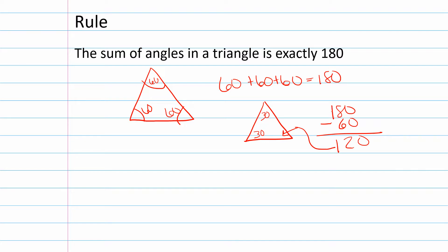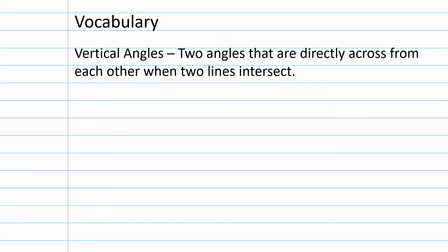All three angles add up to 180 degrees — that's a really important rule. Now we have some vocabulary. Geometry is like a puzzle; you need to know how to put the pieces together. With intersecting lines, vertical angles are two angles that are directly across from each other when two lines intersect. For example, this angle and this angle are a vertical angle pair.